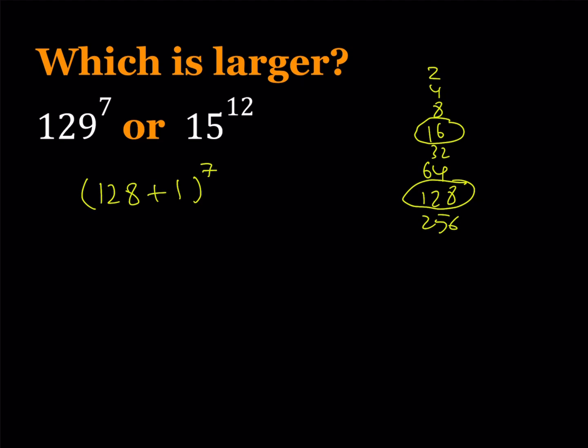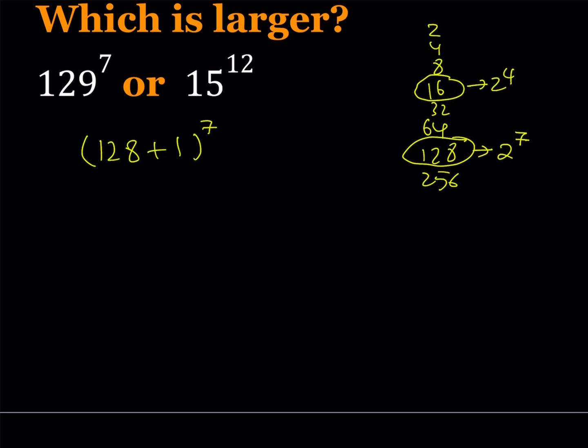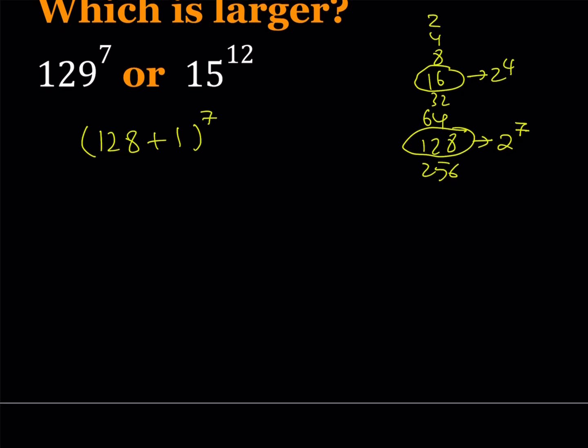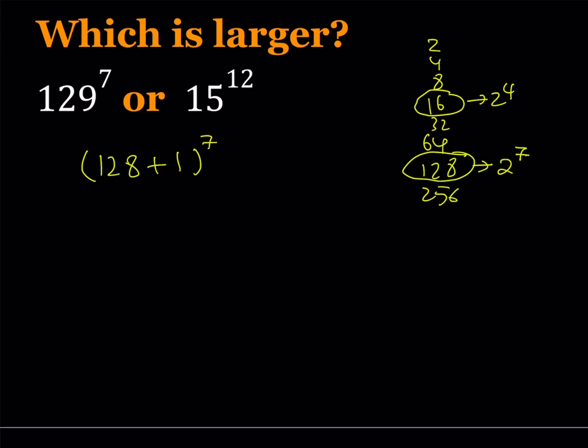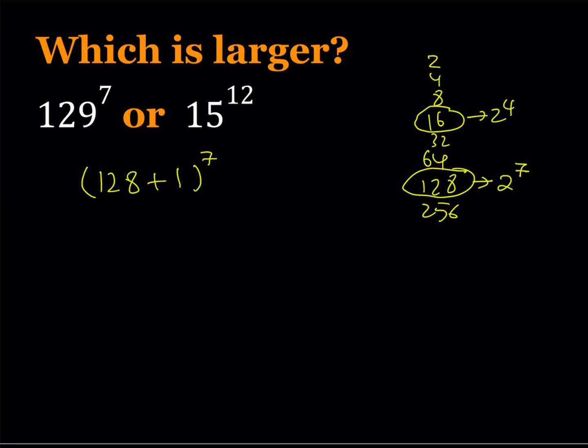And as you know, 16 is 2 to the 4th power, and 128 is 2 to the 7th power, or you should know that. So this kind of tells me that I can use the binomial theorem. I can expand it, and I can do the same thing here, 16 minus 1, so on and so forth. But that's not the route I'd like to take. I'd like to take a different route. Obviously, you can use the binomial theorem. When comparing two large numbers, binomial theorem is a very common method, by the way.